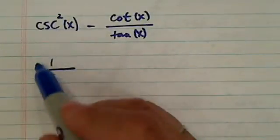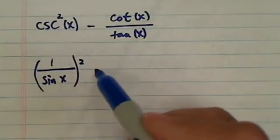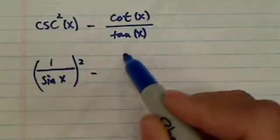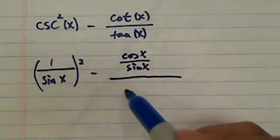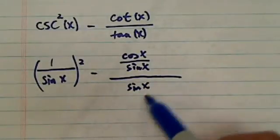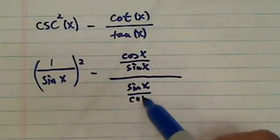OK, since this is a square term, then we have this whole thing squared. Minus cotangent is really cosine of x over sine of x. And then tangent on the bottom is just the reverse, sine x over cosine of x.